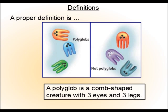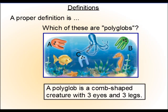So, now that we have a definition, can you tell which of these are polyglobs? Well, this has two eyes, and we say that ours has three, so this would not work. Neither is C. Even though it does have three eyes, it does not have three legs. And that's part of our definition as well, that it has to have both the three eyes and the three legs. Therefore, you can see that B is the only thing that worked.